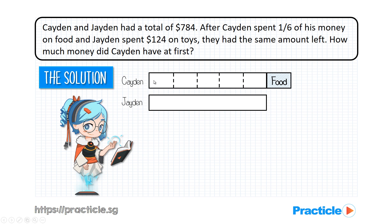Next, since the amount Caden was left with is the same as the amount Jayden was left with, Jayden would also have five units left after spending his money. But what is the amount Jayden had before he was left with these five units? Remember, he spent $124. So we need to add this $124 back into his model. This would be the original amount of money that Jayden had.